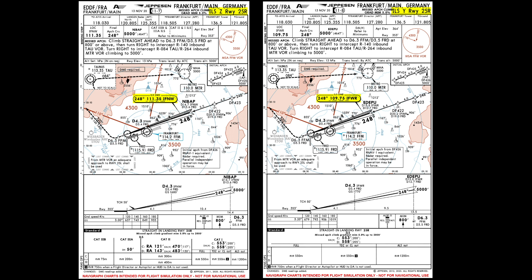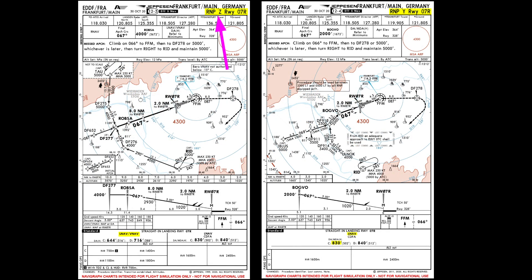The missed approach procedure is the same and the category 1 minimum is also the same with 553 feet. Let's now for comparison look at another approach type here in Frankfurt — this time the approach into runway 07R. There we can see RMP Zulu runway 07R and on the right-hand side the RMP Yankee 07R. Initially you can see a different approach path, and from the initial approach fix to the final descent point both are completely different. One is called ROPSA for the Zulu approach and for the Yankee approach it's called BOGVO.